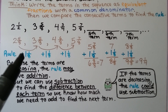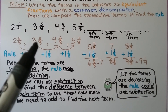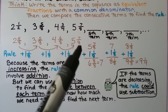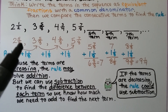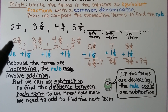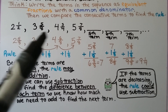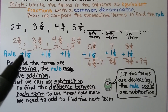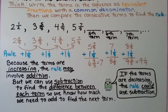Look at what the fractions are doing: four eighths, five eighths, six eighths, seven eighths — each going up by one eighth. And look at the whole numbers: two, three, four, five — going up by one. So our rule is plus one and one eighth.